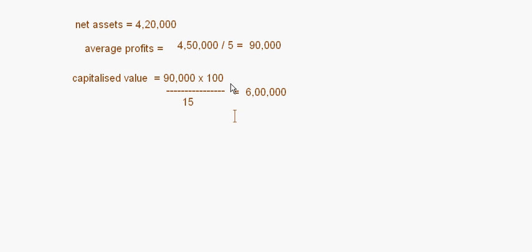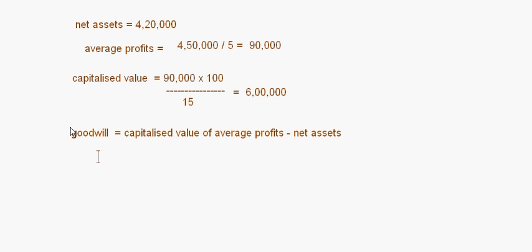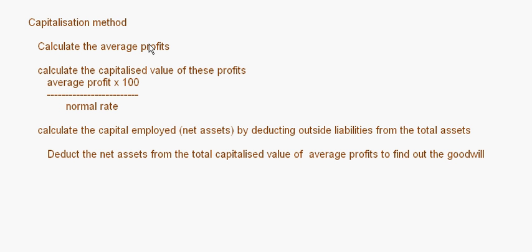Now calculate the goodwill. Goodwill equals the capitalized value of average profits minus the net assets. The capitalized value of average profits is 6,00,000, minus the net assets of 4,20,000, giving goodwill of 1,80,000. This is the value of goodwill under the capitalization method — specifically, the capitalization of average profits. You also have capitalization of super profits as a variant. With that, I come to the end of today's session. Thank you.